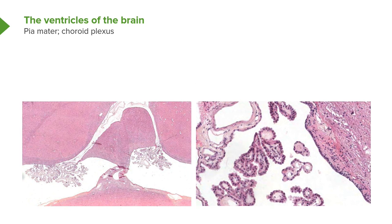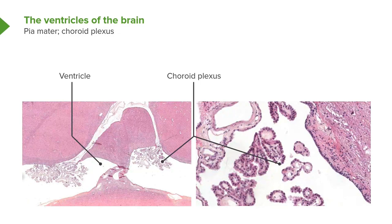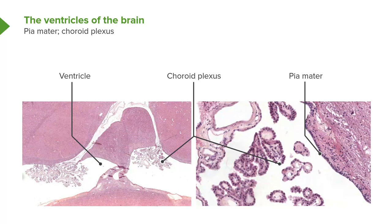Under high power on the right-hand side, you can see these choroid plexuses within the ventricle. They're really extensions of the pia wrapping around very small groups of blood capillaries. And those epithelial cells that form the choroid plexus are responsible for making the cerebrospinal fluid — it's a very complex mechanism that I won't explain now.